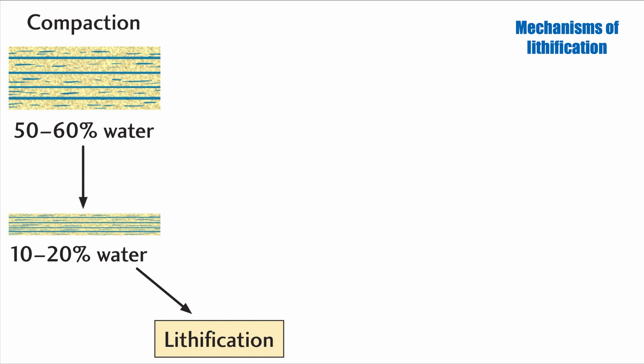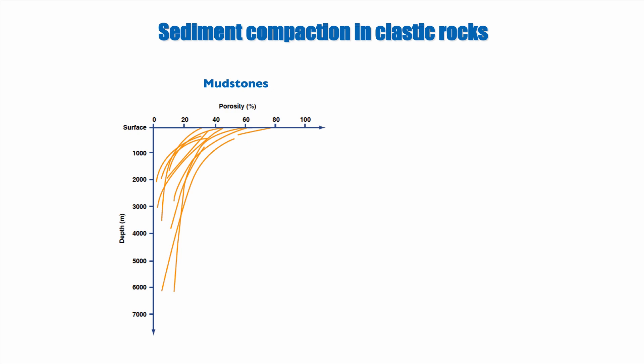This is very visible in clastic rocks. If you look at mudstone for instance, on the horizontal axis we have porosity, on the vertical axis we have depth which can equate to lithostatic pressure. You can see that porosity in those mudstone decreases with increasing depth which is a function of dewatering, of losing water.